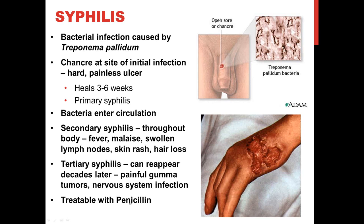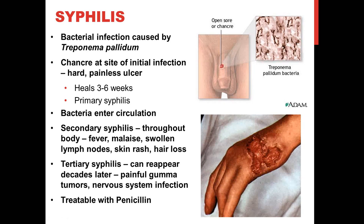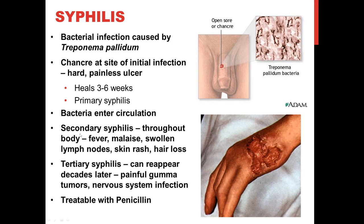If untreated, the bacteria enter the cardiovascular system, get into the blood and lymphatic system, and spread throughout the body — progressing to secondary syphilis. You have bacteria throughout the body, high fever, malaise, fatigue, swollen lymph nodes, skin rashes, and hair loss.